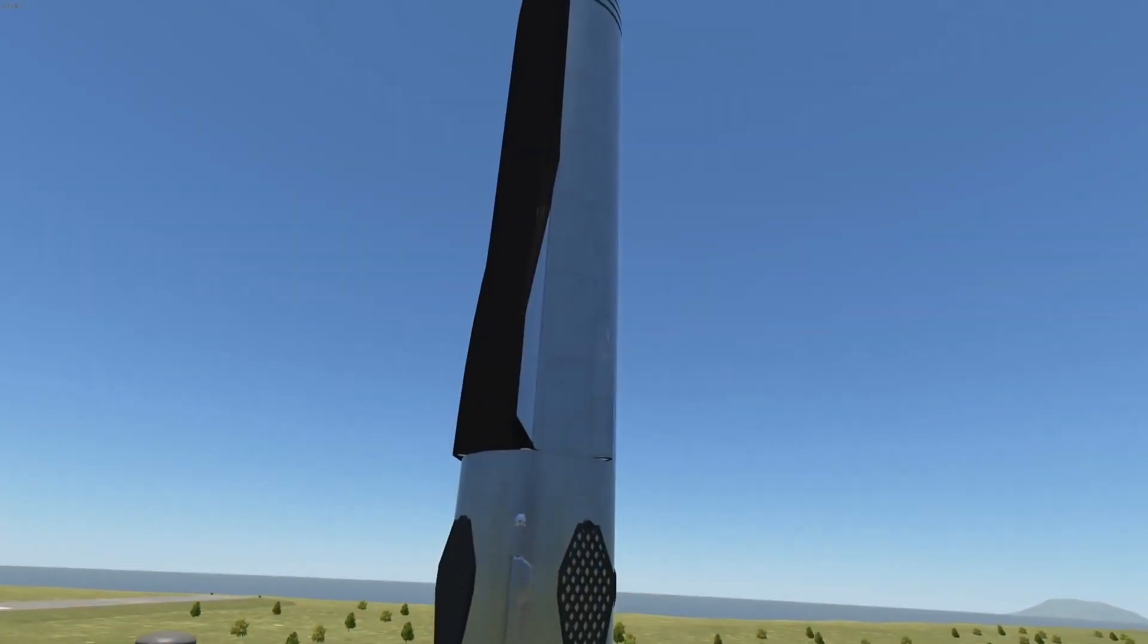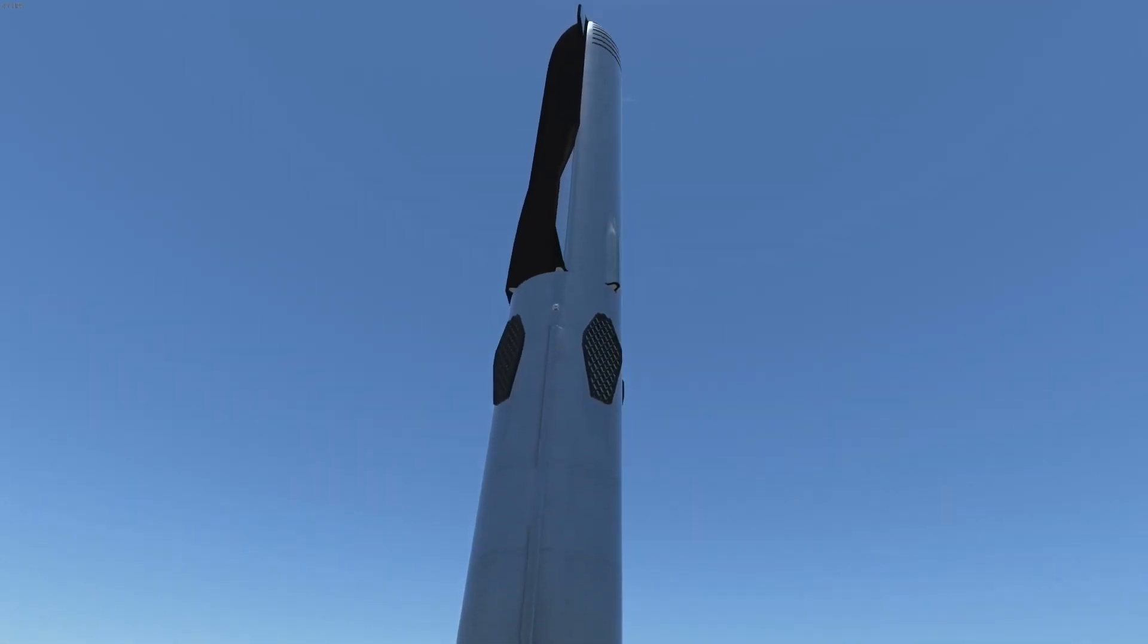You might think this is CGI, but it isn't. The reason he can do that is because these tiles are incredibly poor conductors of heat, so he can just pick it up and it won't burn him. And this is how the material is going to protect the hull of Starship from extreme temperatures.